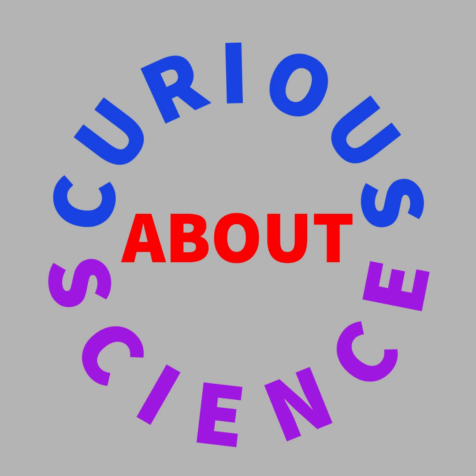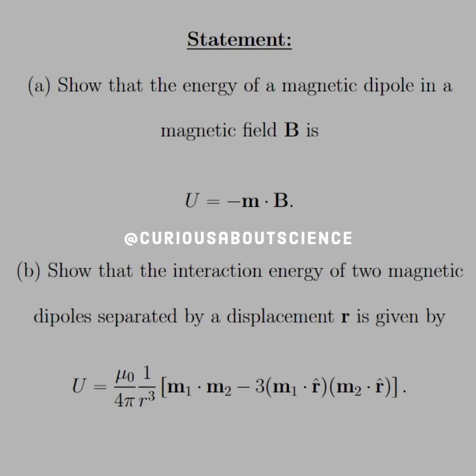All right, welcome back. Our statement today reads: Part A, show that the energy of the magnetic dipole in the magnetic field B is U equal negative M dot B. Looks familiar?